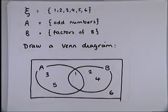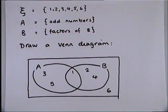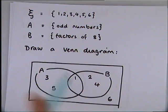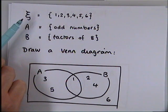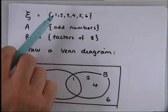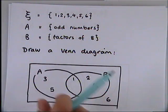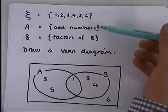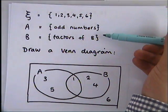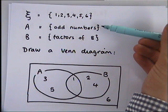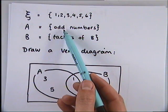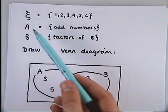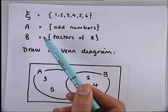So things to remember when drawing that Venn diagram: the squiggly E thing called Xi contains all of the numbers that need to go into the diagram. The curly brackets tell you which numbers belong to which set — so the odd numbers belong to set A and the factors of 8 belong to set B.